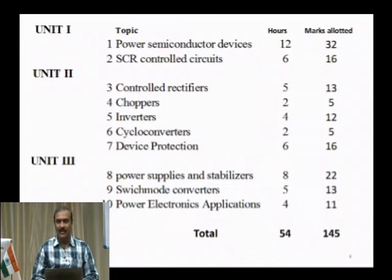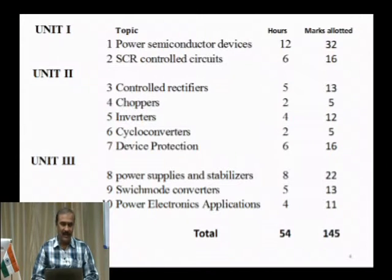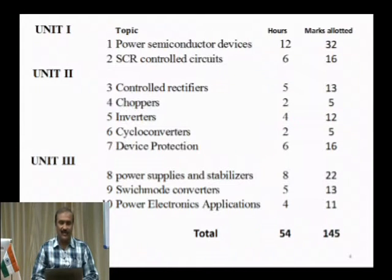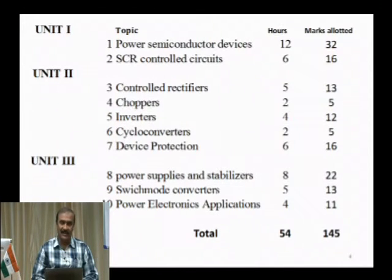Controlled rectifiers: you have already studied the basic rectifier circuit — a device which converts AC to DC. Now you are going to learn about controlled rectifiers and how to control the rectified output. That is taught with different circuits. Then you have choppers — how to convert DC to DC, variation of fixed DC to variable DC. Inverters deal with converting DC to AC, developing single-phase and three-phase inverter circuits.